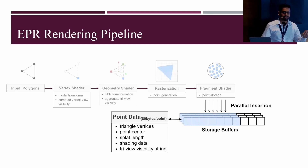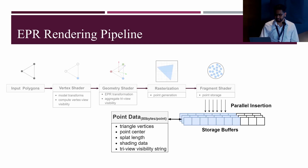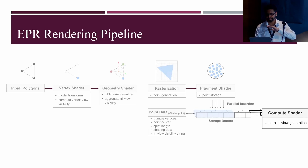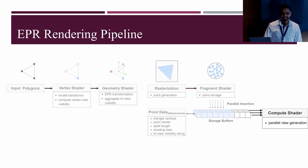The fragment shader places all points into multiple point buffers, which are later splatted in the compute shader. The buffer contents vary by implementation, but at minimum include triangle vertices, point centers, splat length, shading information, and the triangle-view visibility stream. The compute shader processes all points for each point-and-view pairing, splatting each point into the off-screen view buffer. We use compute because it improves speed and enables more aggressive deferred shading.